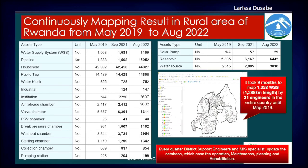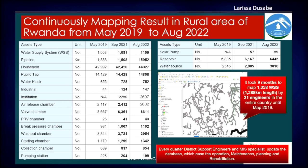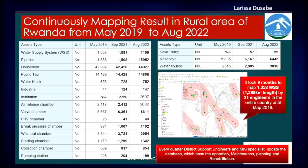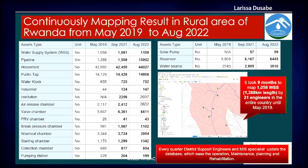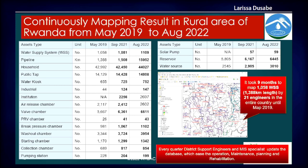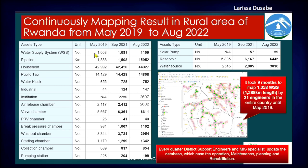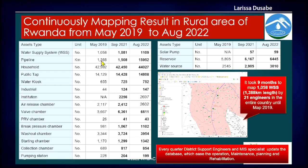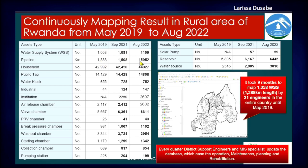Mapping is a continuous activity. We mapped all assets of water supply systems such as pipelines, household connections, public taps, water kiosks, industrial connections, and all types of chambers. From when we started in May 2019, we recorded 1,058 water supply systems. As of August 2022, we had 1,109 water supply systems. And the pipeline length, due to rehabilitation and new construction, grew from 1,388 km to 15,952 km.